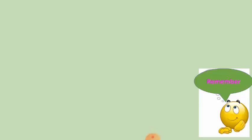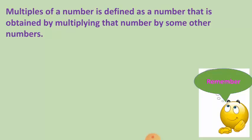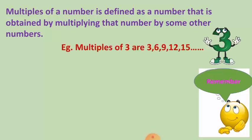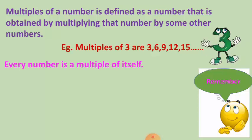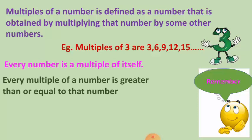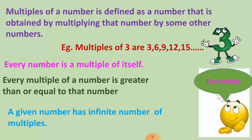Let's have a quick recap regarding the topic of multiples. Multiples of a number are obtained by multiplying the given number by some other number. Key properties: every number is a multiple of itself; every multiple of a number is greater than or equal to that number; and a given number has an infinite number of multiples.